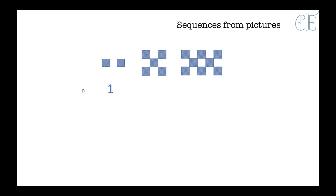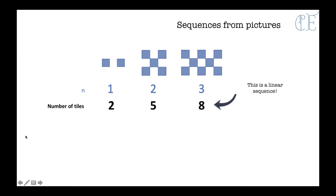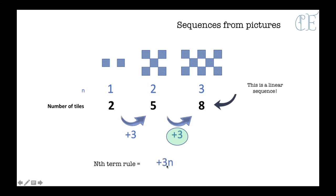Last bit about sequences — sequences from pictures. We have three different pictures and label them 1, 2 and 3, which is our n value. This is our first term, second term, third term. Number of tiles: 2, 5 and 8. It is going up by three every time, so it's a linear sequence. The nth term rule begins with 3n. What do we need to do to go from 3 to 2? That is to minus 1. So we need to take away 1, and 3n − 1 is our nth term rule for this sequence.